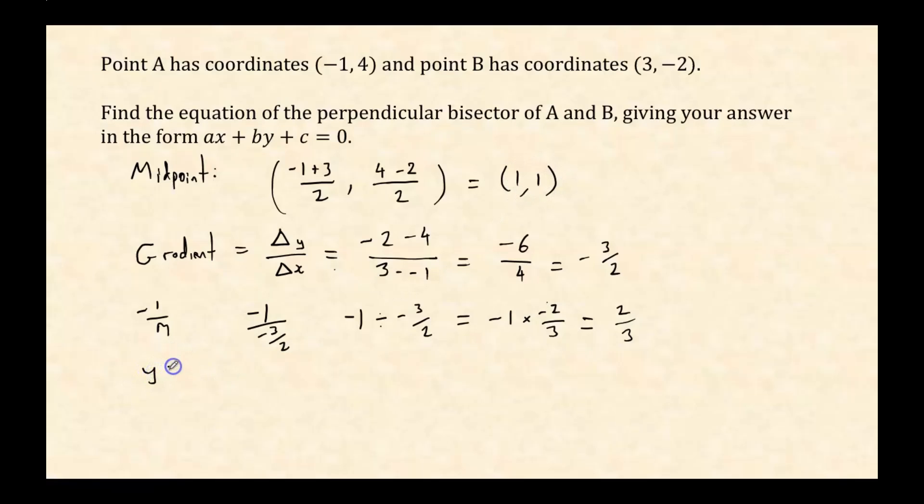So I know that y must equal 2/3x plus something because it's got a gradient of 2/3. And I know that when x is 1, y is 1. So I'll just sub those in. When y is 1, x is 1, so that's 2/3 times 1 which is 2/3 plus c. Finally, subtracting 2/3 from both sides I'm going to get c is 1/3. So that means y equals 2/3x plus 1/3.